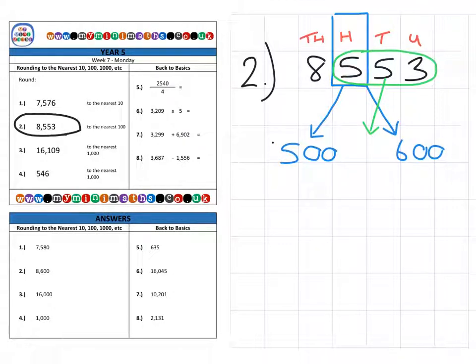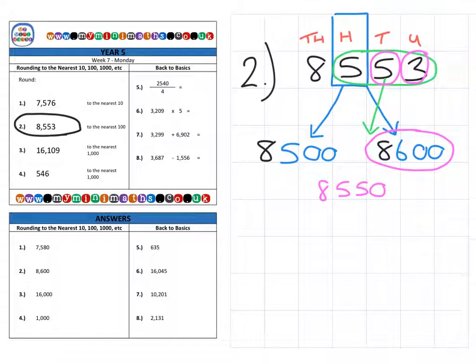So, if we look at the full number of 8,500 and 8,600, we can highlight the 53 and we can say, well, this is over halfway, which would be 8,550. The three takes it over halfway, so it's closest to 8,600.